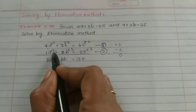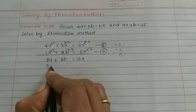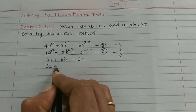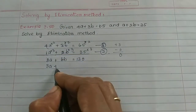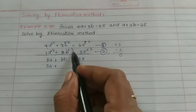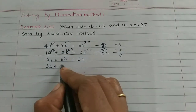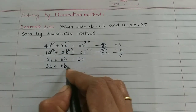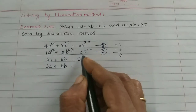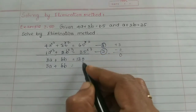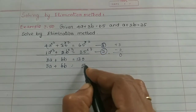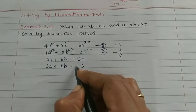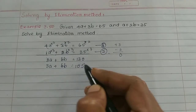Now multiply the second equation by 3: 3 times 1a is 3a, plus 2 times 3 is 6b, equal to 35 times 3. 3 times 5 is 15, carry 1; 3 times 3 is 9, plus 1 is 10. So the second equation becomes 3a plus 6b equals 105.